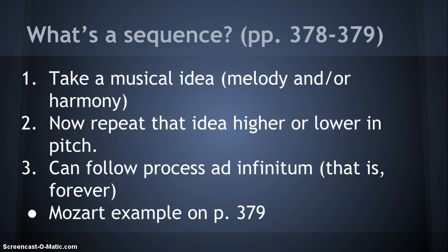A good example of an actual musical example is on page 379, which is the Mozart. Mozart's taking this melody and notice that he repeats it down a third in the next measure, and then repeats it down a third again. At the same time, it's very common for melodic sequences to be accompanied by harmonic sequences, which is what we have here: an F major chord going to C major chord, taken down a third to D minor going to A minor, then B-flat major going to F major. Then the sequence is broken in the next two measures.